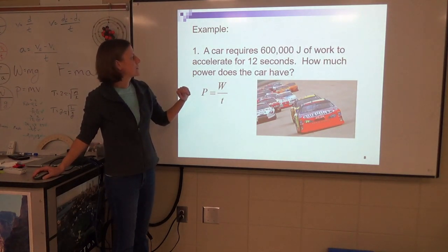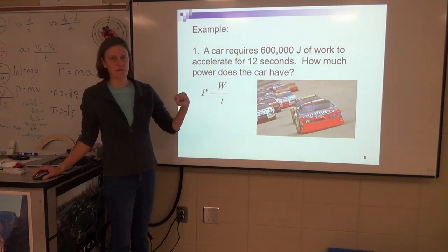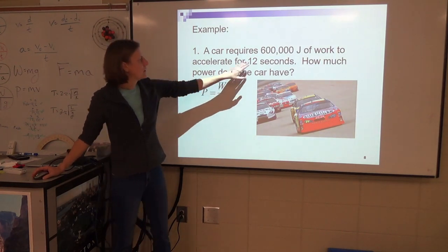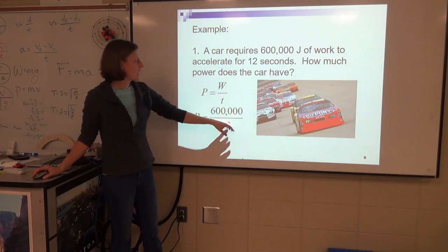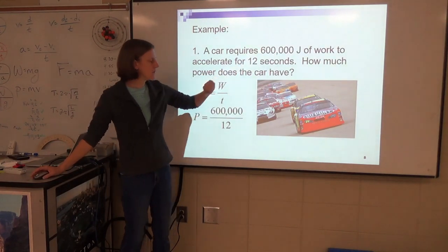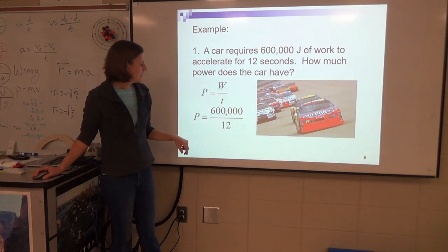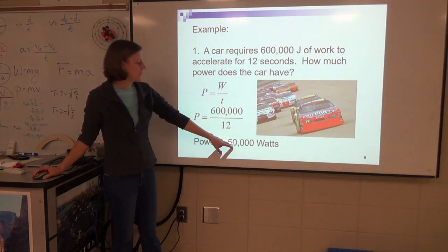A car requires 600,000 joules of work to accelerate for 12 seconds. How much power does the car have? Well, if you know the work—600,000 joules—that's going to go on the top. Your time in seconds is standard metric units, so that goes on the bottom. And you get about 50,000 watts.